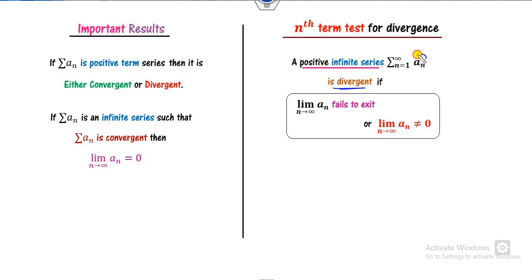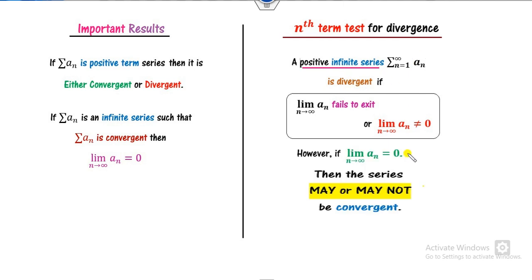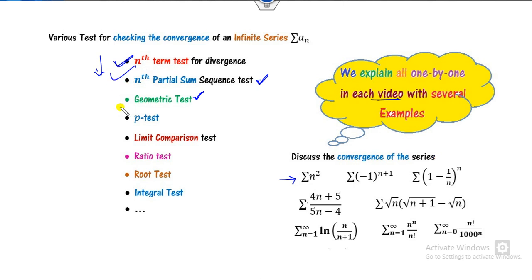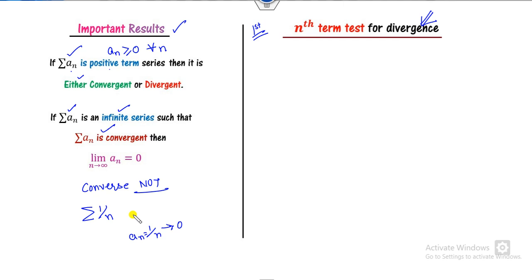If you compute the limit of A_n and it fails to exist — meaning it goes to plus or minus infinity, or the limit does not approach zero — then you can say the series is divergent. However, if the limit is zero, the series may or may not be convergent. In that case, we apply various other tests to check whether it is convergent or not.